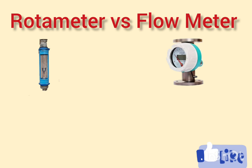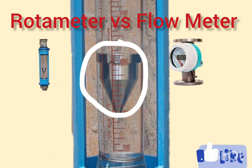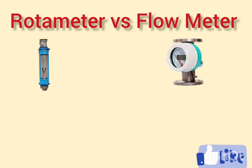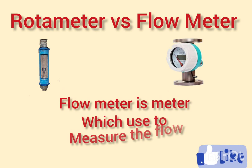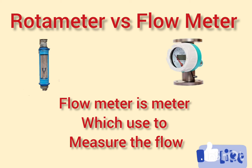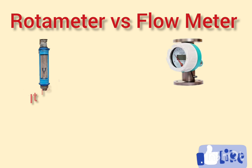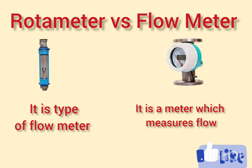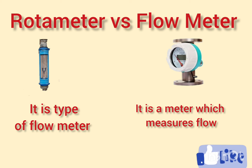So the rotameter consists of a tapered tube with a float inside that rises or falls depending upon the flow. A flow meter is a meter which measures the flow. The rotameter comes under one type of flow meter - flow meter is a meter we use for the measurement of flow, and rotameter is one type of flow meter which operates based on the principle of variable area.